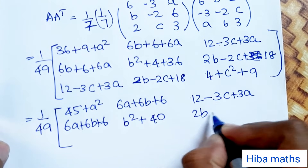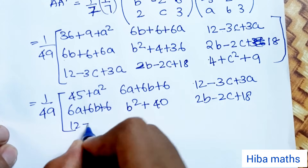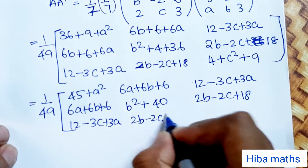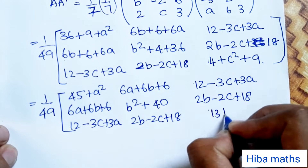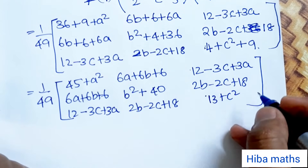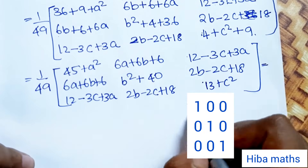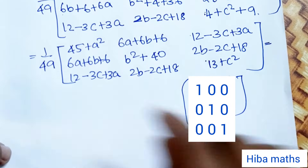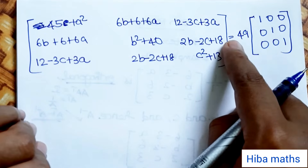The full matrix entries: b squared plus 40, 2b minus 2c plus 18, 12 minus 3c plus 3a, 2b minus 2c plus 18, and c squared plus 13. The orthogonal condition: A into A transpose equals I matrix, that is [1,0,0; 0,1,0; 0,0,1]. Multiplying both sides by 49: 49 times I.